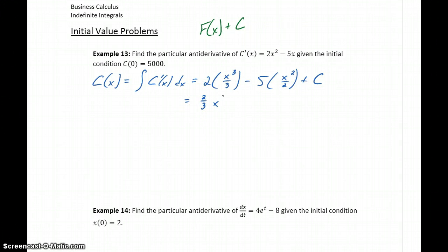So just a little bit of rewriting, we get 2/3 x³ - 5/2 x² + c.